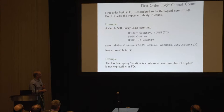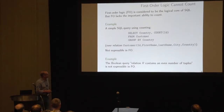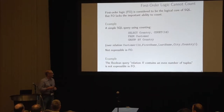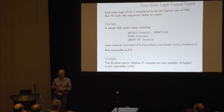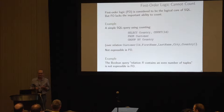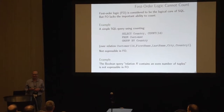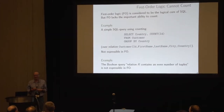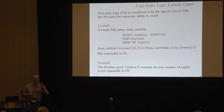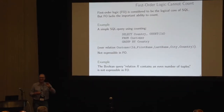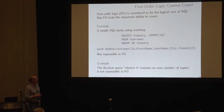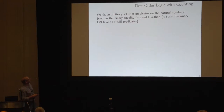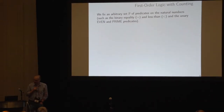Similarly, a query like 'does a relation contain an even number of tuples?' is a boolean query that we know is not expressible in first-order logic. We have a customer database and we want to count how many customers we have from each country — a fairly simple query that uses counting. So we want to look at first-order logic with counting, and in particular query evaluation for first-order logic with counting.